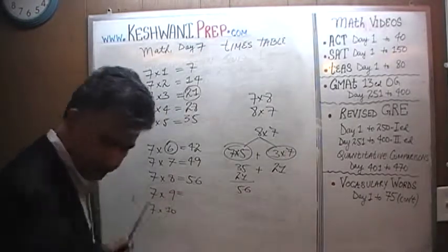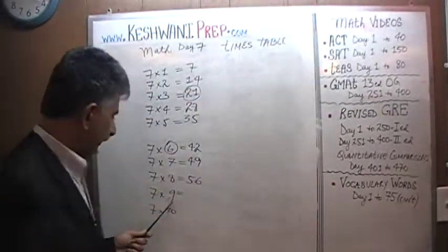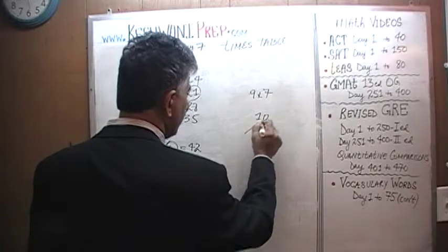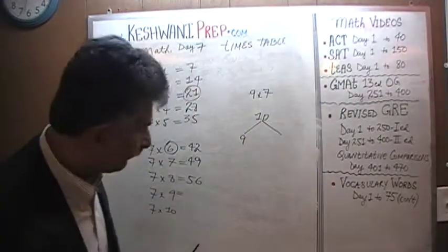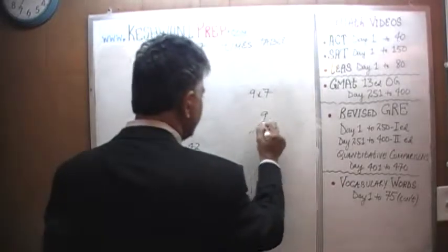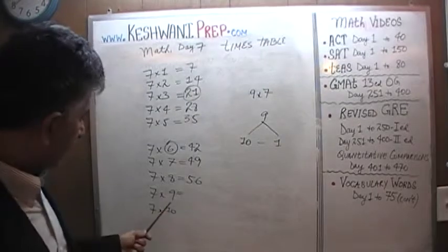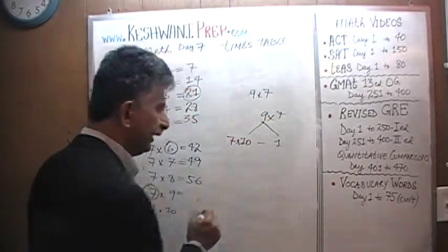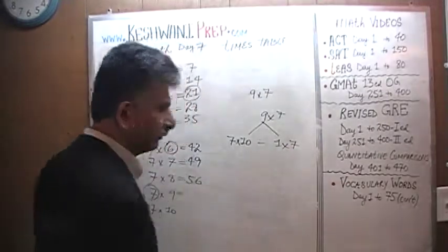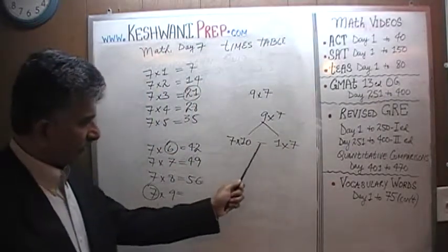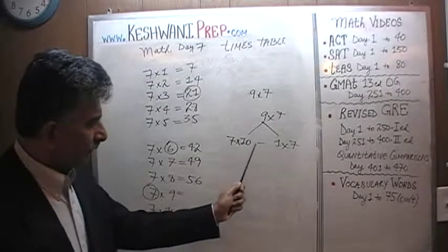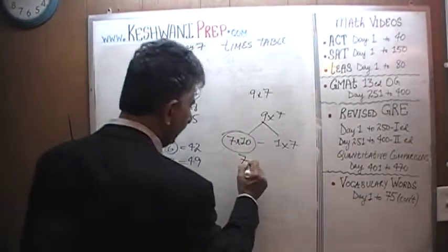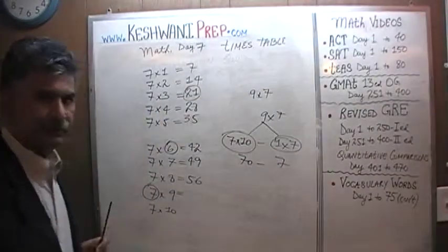How about 7 nines? Don't look at 7 nines as 7 nines — look at it as 9 sevens. 9 can be written as 10 minus 1. We have 7 of them. So 7 nines is going to be 7 tens minus 7 ones. 7 tens minus 7 ones gives you 7 nines, because 10 minus 1 is 9. We know 7 tens is 70 and 7 ones is 7. It's just 70 minus 7 which is 63.